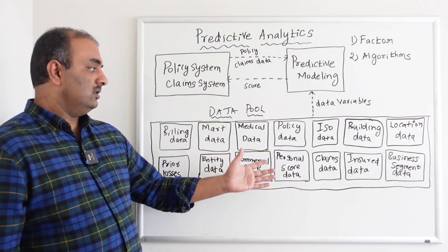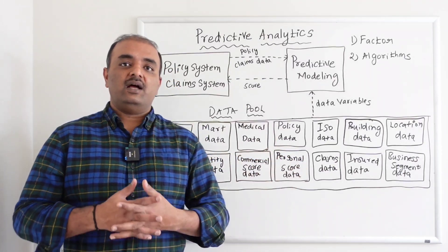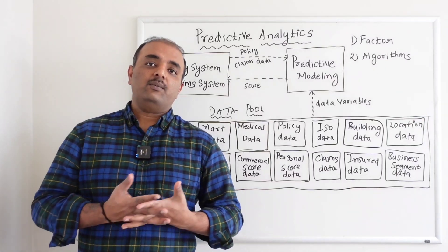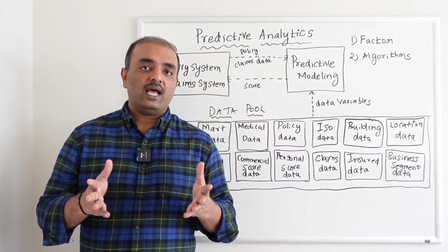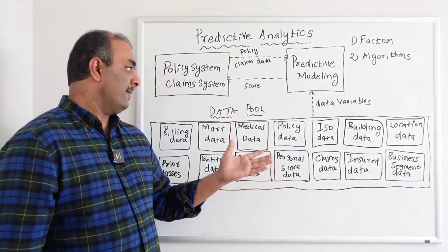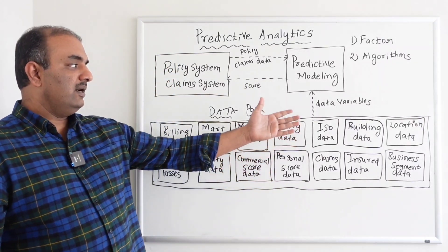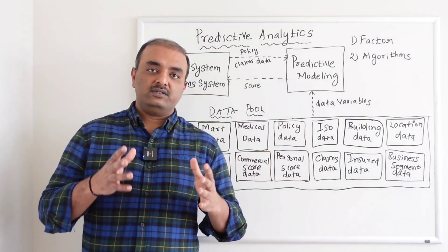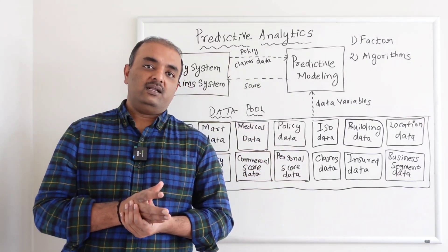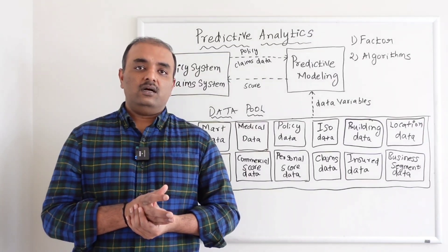Claims data - if this customer hasn't had any claims in the past, then you can give less premium. This customer has more claims, more premium. Policy data, ISO data, building data - like what kind of characteristics, what kind of safety precautions this particular customer is going to have.